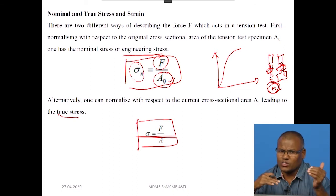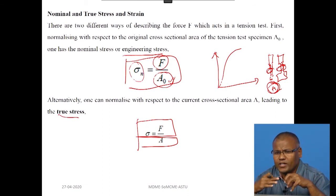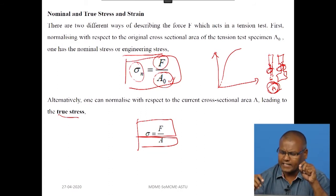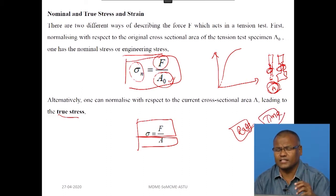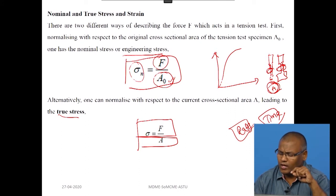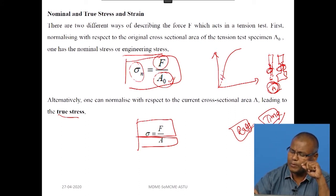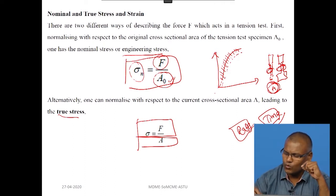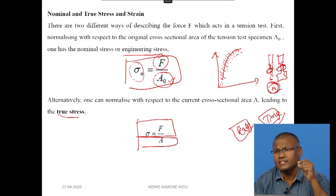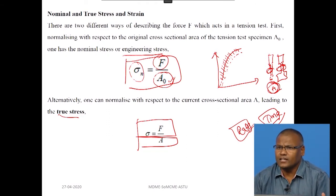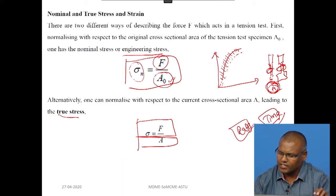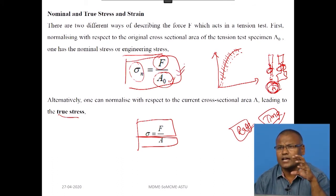Strictly speaking, when testing is ongoing, we fix the input parameter as a rate, which also indicates time. At each and every deformation point, there must be different cross-sectional areas, because once deformation continues, the area will not remain the same. When the area is changing, how can we rely on engineering stress as the actual stress to understand the behavior of a material?